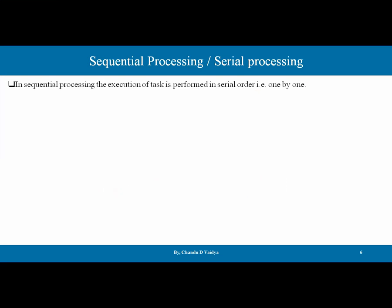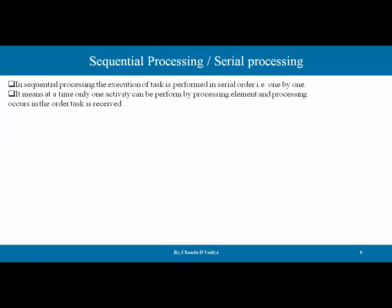In sequential processing, the execution of tasks is performed in a serial order, that is one by one. So in sequential processing, execution happens in order — one after the other: A1, A2, A3, A4 in sequence. It means that at a time only one activity can be performed by the processing element, and processing occurs in the order the task is received.